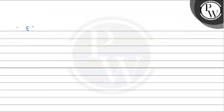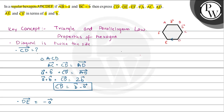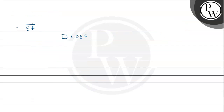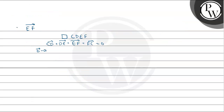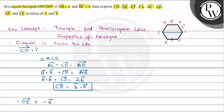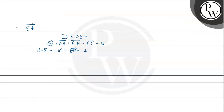The third thing we have to evaluate is EF vector. We will consider quadrilateral CDEF. We know that if we cyclically add all the sides of a quadrilateral, the sum would be zero: CD vector + DE vector + EF vector + FC vector = 0. CD vector was b - a, DE vector was -a. For FC vector, notice that FC goes from F to C in the same direction as a vector, and a vector is parallel to this diagonal, so FC vector would be twice of a vector.